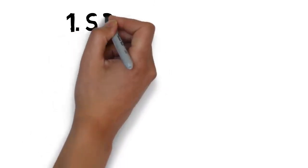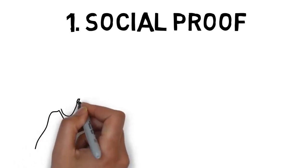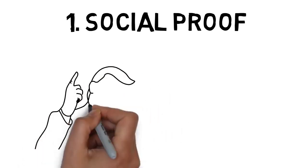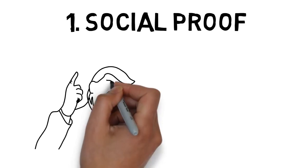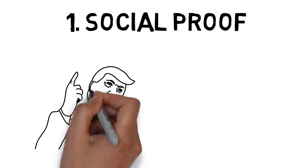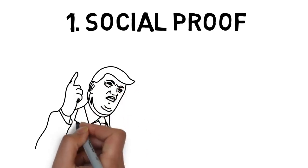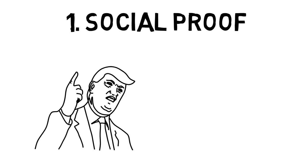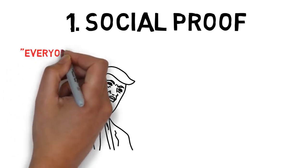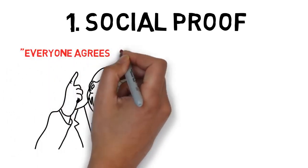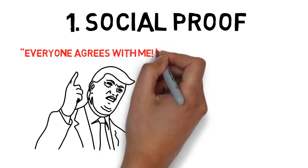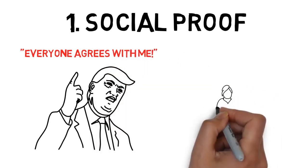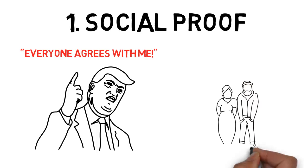Number 1: Social Proof. One of the most powerful tools to persuade other people is called social proof. Social proof is when you support an argument by saying that everyone else supports it too. For example, Donald Trump often defends himself by saying things like, everyone agrees with me. It doesn't matter what your politics are for you to realize that he's using a psychology trick, and it actually works very well.